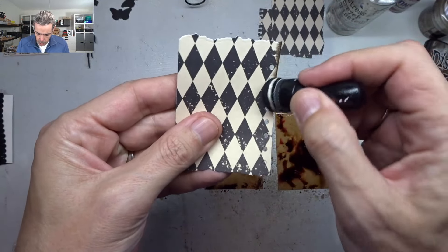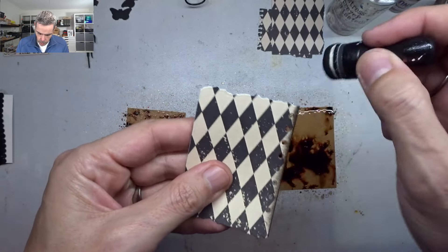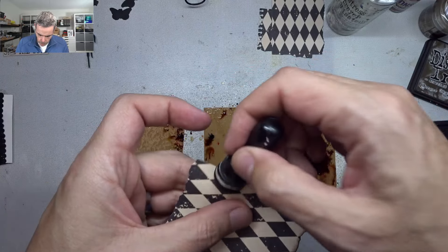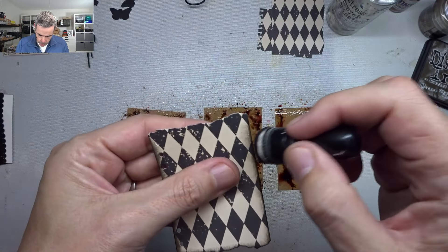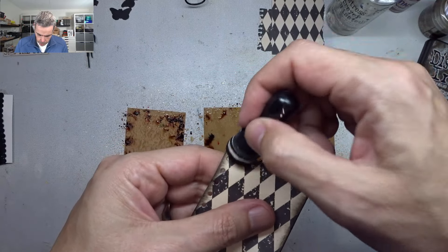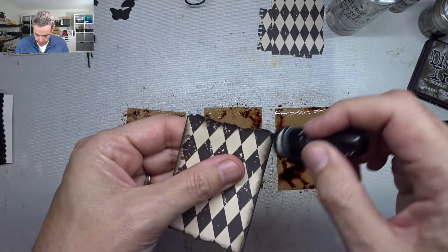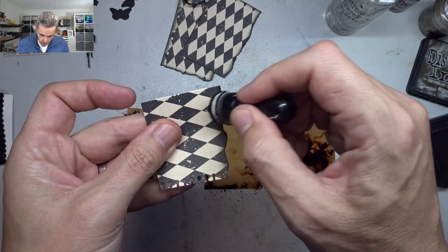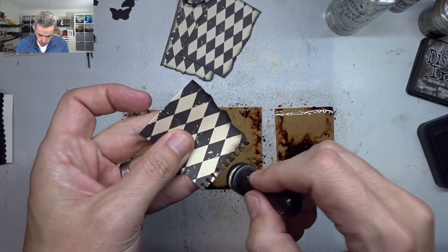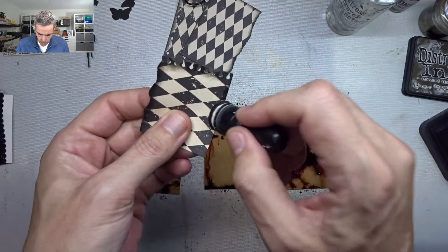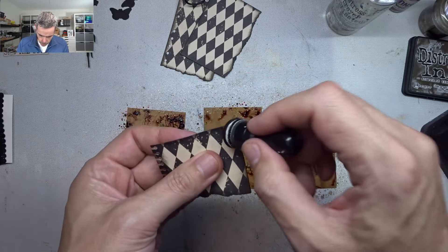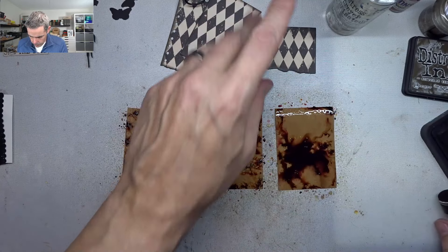Now I'm going to edge this with scorched timber. This is gorgeous paper, great quality. I love this grungy pattern. That's going to be on top of this. I just love the difference it makes when you edge this, especially these torn edges. They look like burned fun stuff.